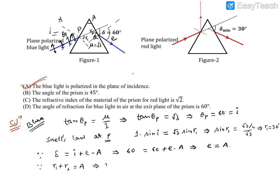To apply Snell's law at exit point Q, we need R2. We know R1 + R2 = A, so R2 = A − R1 = A − 30°. Applying Snell's law at Q: √3 × sin(A − 30°) = 1 × sin E. This gives us one equation relating A and E.